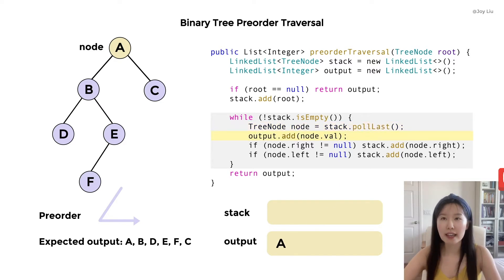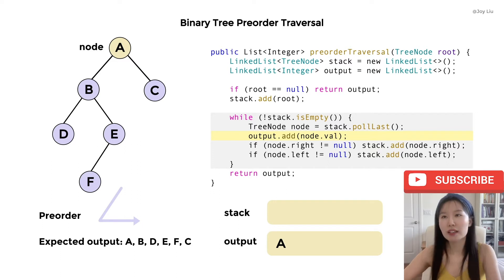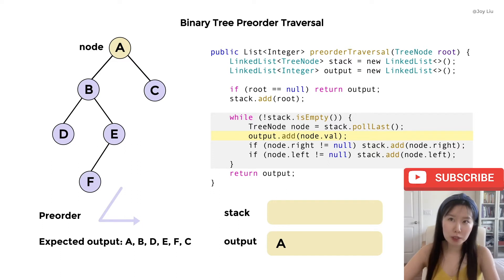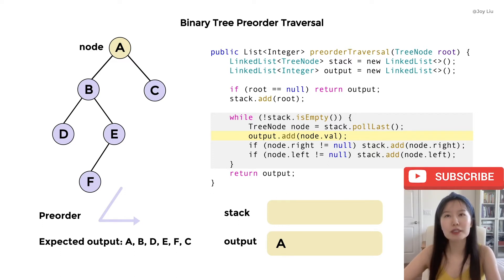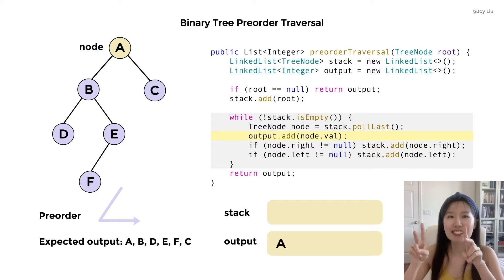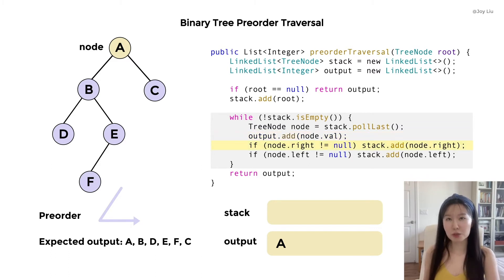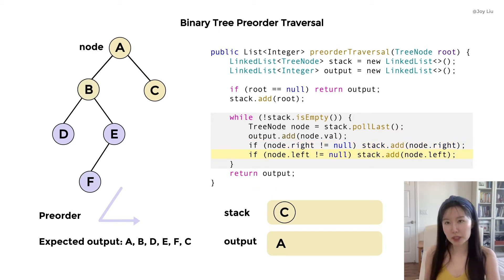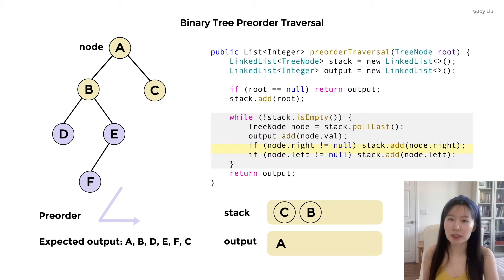We get the value of this node and add it to the output. Now output got its first member, which is the root — and it's pretty intuitive as a pre-order traversal. We verify the expected output — it's correct! Next, we check if node has the right child. Yes. Then we grab node C to the working memory stack. Next, we check if node has the left child. Yes. Then we grab node B to the working memory stack.